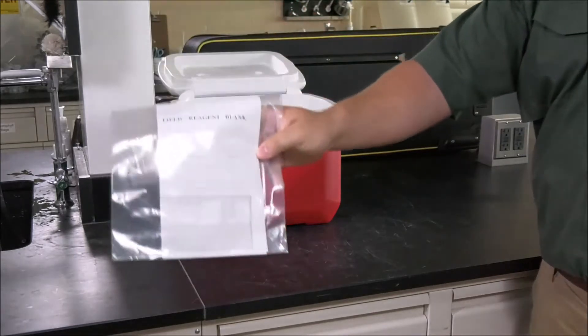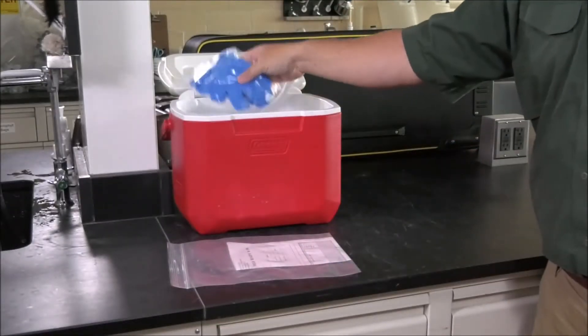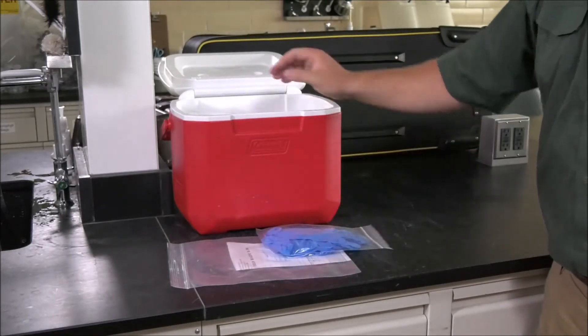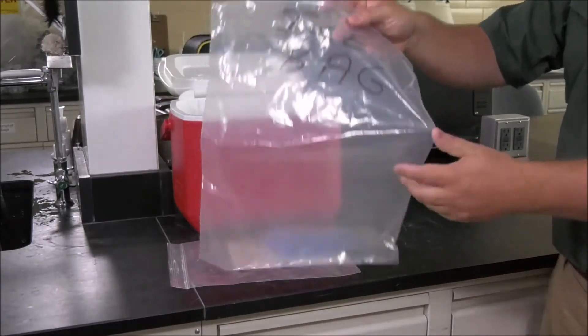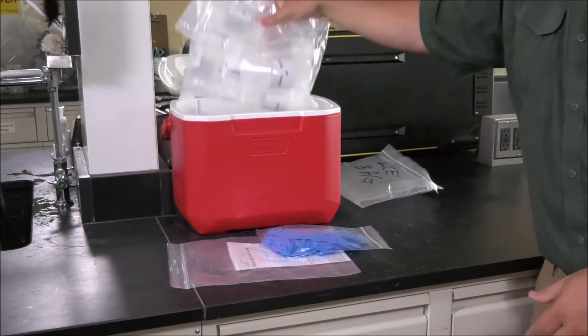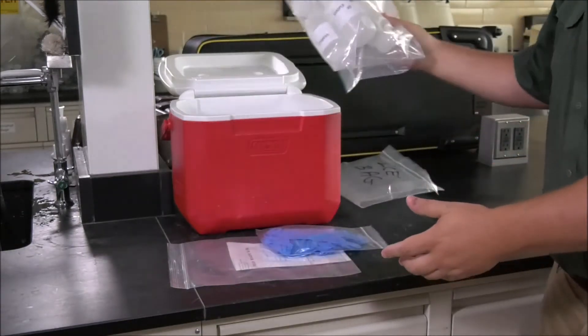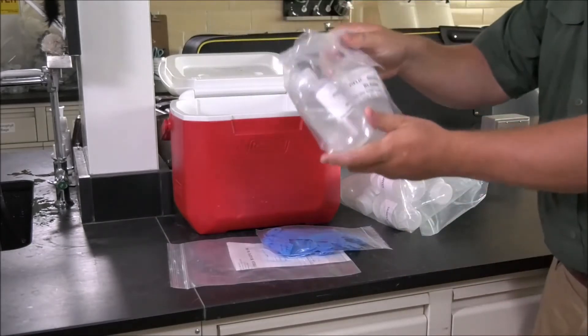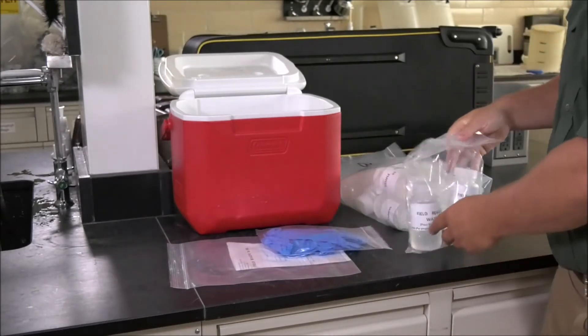The chain of custody form, a bag containing nitrile gloves, an empty resealable plastic bag, one resealable plastic bag containing six empty sample bottles with preservative, and a resealable plastic bag containing a field blank bottle with PFAS free water and an empty field blank bottle with preservative.